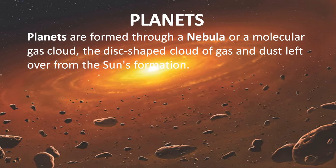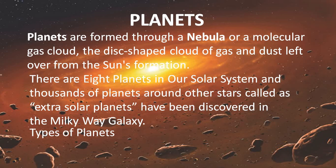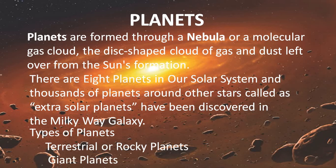The planets are formed through the nebula — a molecular gas cloud — which is a disk-shaped cloud of gas and dust left over during the sun's formation. There are eight planets in our solar system, but thousands of planets around other stars, and those planets are also called extrasolar planets. There are two types of planets: terrestrial or rocky planets, and giant planets.